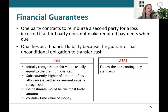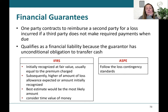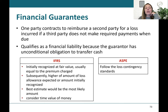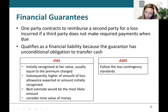Now let's talk about financial guarantees. A financial guarantee is where one party contracts to reimburse a second party for a loss if the original party doesn't make the required payment — for example, an arrangement where another party guarantees your accounts receivable collection in exchange for a premium. This qualifies as a financial liability because the guarantor has an unconditional obligation to transfer cash. Under IFRS, it's recognized at fair value, usually equal to the premium charged, with any additional loss going through the income statement. ASPE considers this the same as a loss contingency.